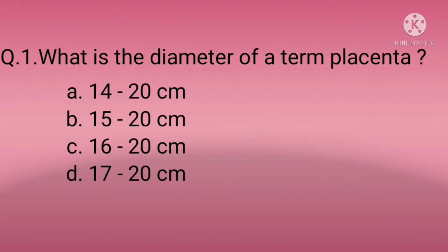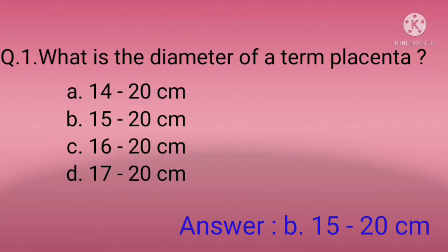Hello, welcome back to RB MCQ Bank Knowledge Buster. Today I am going to discuss MCQs on placenta. Question one: What is the diameter of a term placenta? Option A: 14 to 20 cm, Option B: 15 to 20 cm, Option C: 16 to 20 cm, Option D: 17 to 20 cm. The correct option is B — 15 to 20 centimeters.